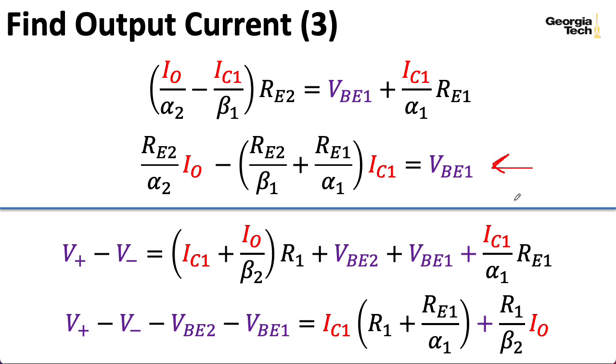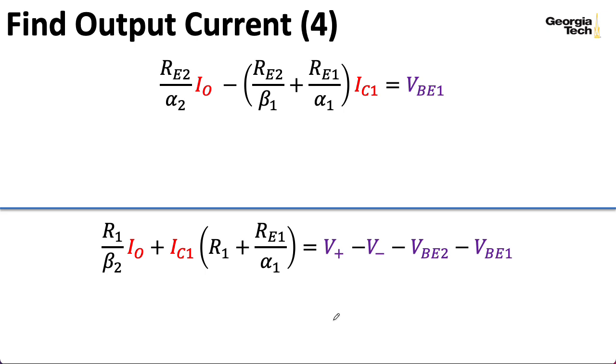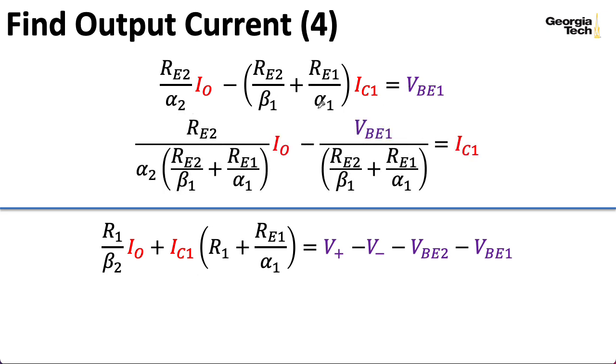Okay. Let's take this equation and this equation and write them on another slide. And when I do that, I'm going to flip the left-hand and right-hand sides here. So, I'm going to write equations that look like this. And now what I want to do is I really want IO. So, what I'm going to do is I'm going to solve both of these equations for IC1 and then equate the results. So, let's see. What I need to do is I need to divide through this equation here by the RE2 over beta1 plus RE1 over alpha1.